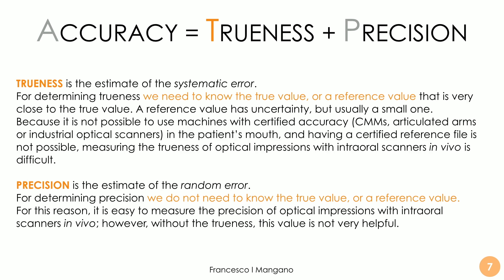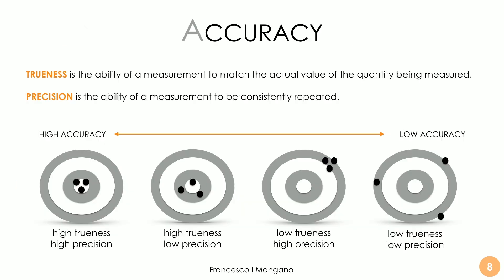Some colleagues try to introduce devices with known geometric properties inside the mouth to have some reference, but it's not easy to calculate them. Precision is something different — we will talk about precision in a later lecture. For determining precision in vivo, it is not necessary to have a reference value. We can take, for example, 10 scans of the same patient, superimpose them, and see if there are variations. Trueness, however, is much more important and is the key factor in determining accuracy.